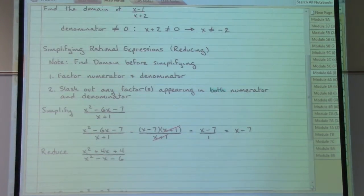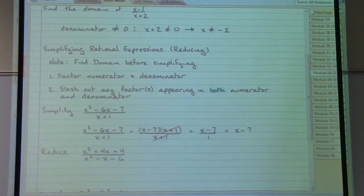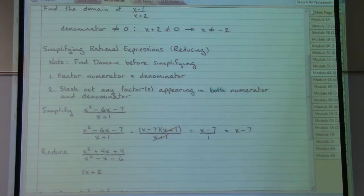The numerator does not have any greatest common factor. So we can begin by saying that we have three terms. Therefore, we would want to use the AC method. And we would come up with x plus two times x plus two. In the denominator, we would also follow our factoring checklist. We do not have a greatest common factor in the denominator. So having three terms, we would use the AC method again. And we would have an x minus three times an x plus two.